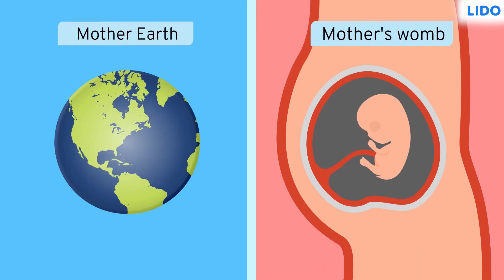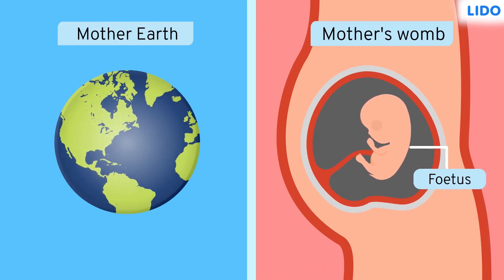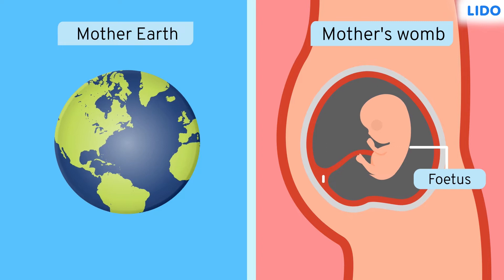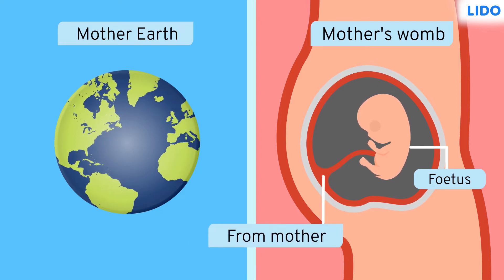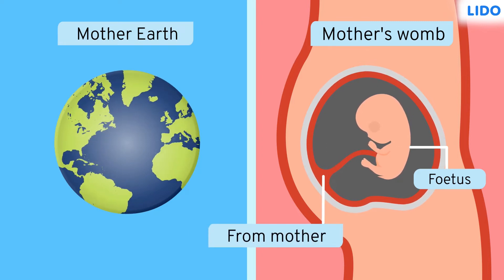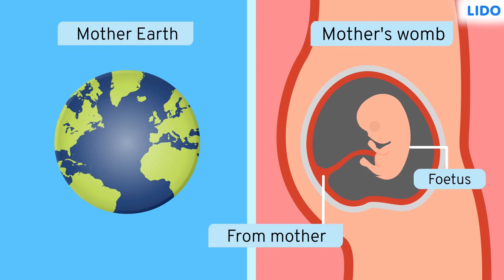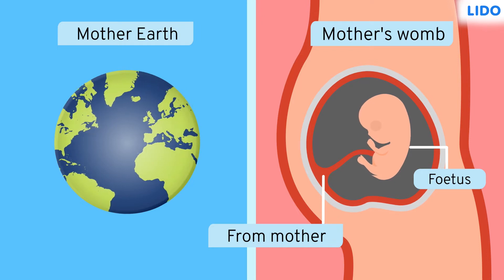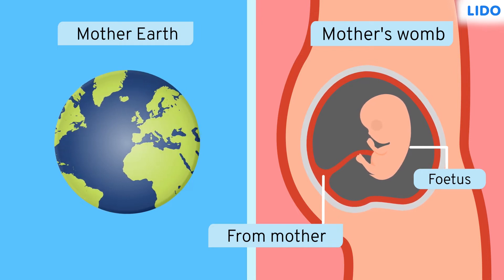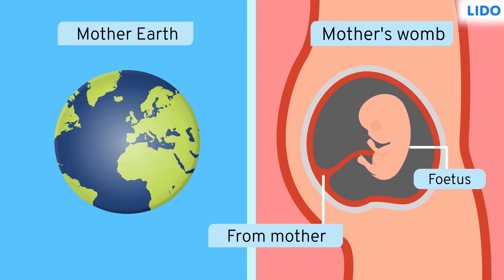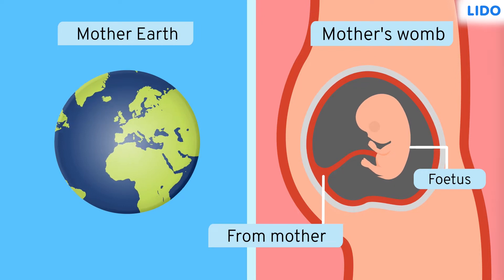Similarly, in the mother's womb, the fetus gets everything from her mother. As Mother Earth gives birth and supports all organisms, let's see how human life begins and grows in a mother's womb.